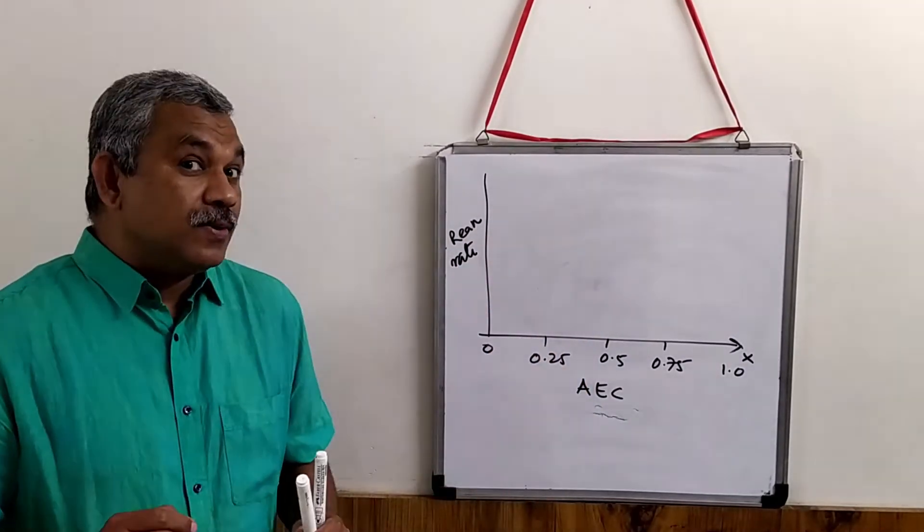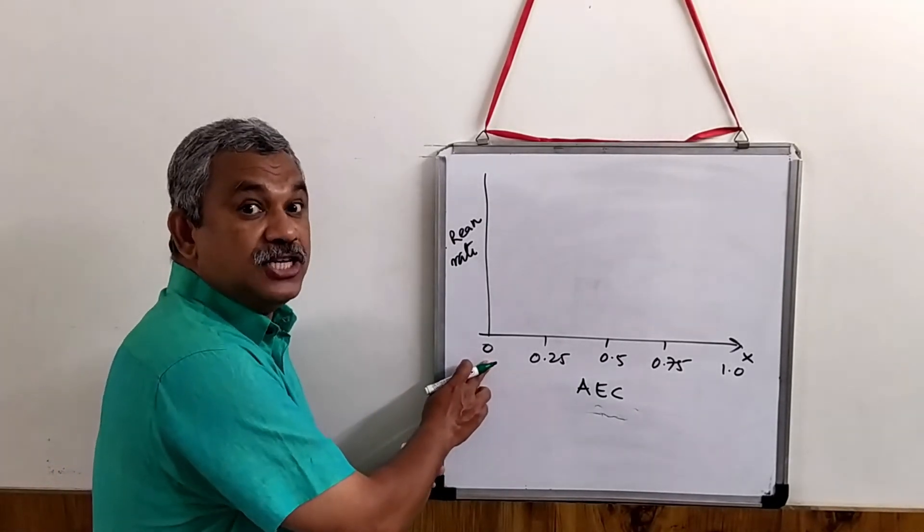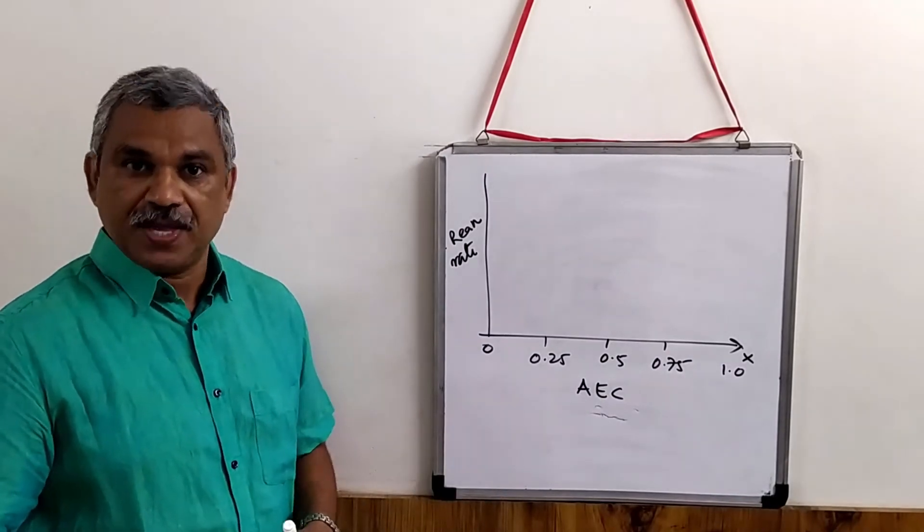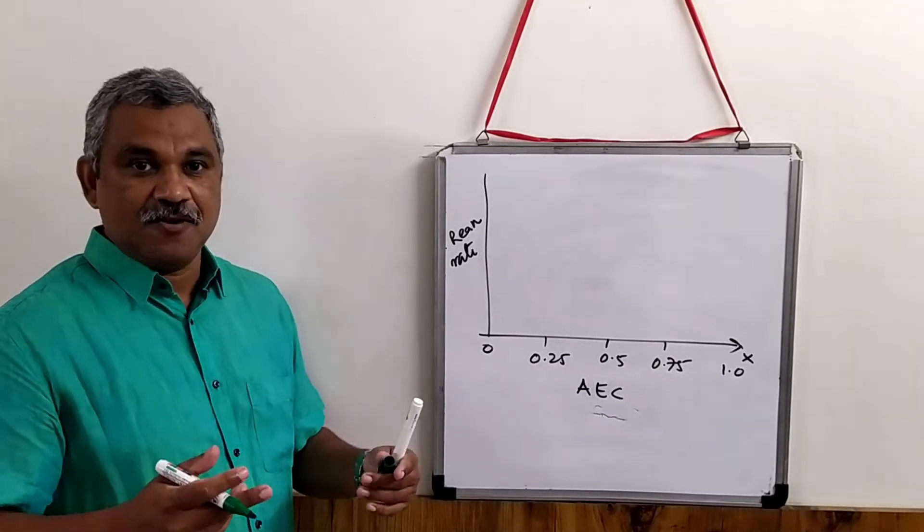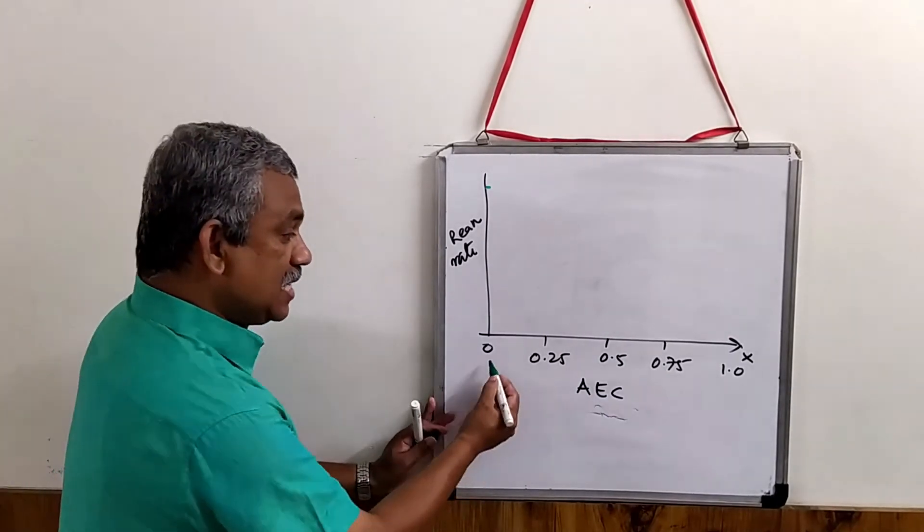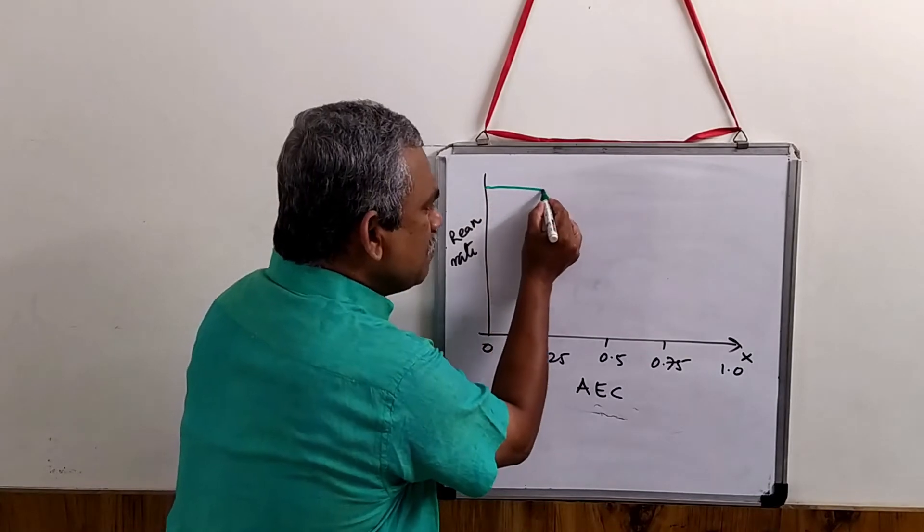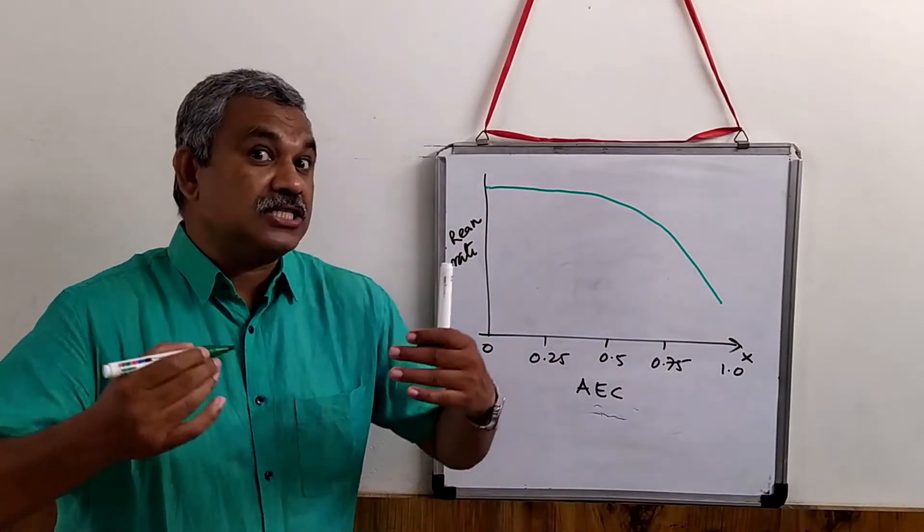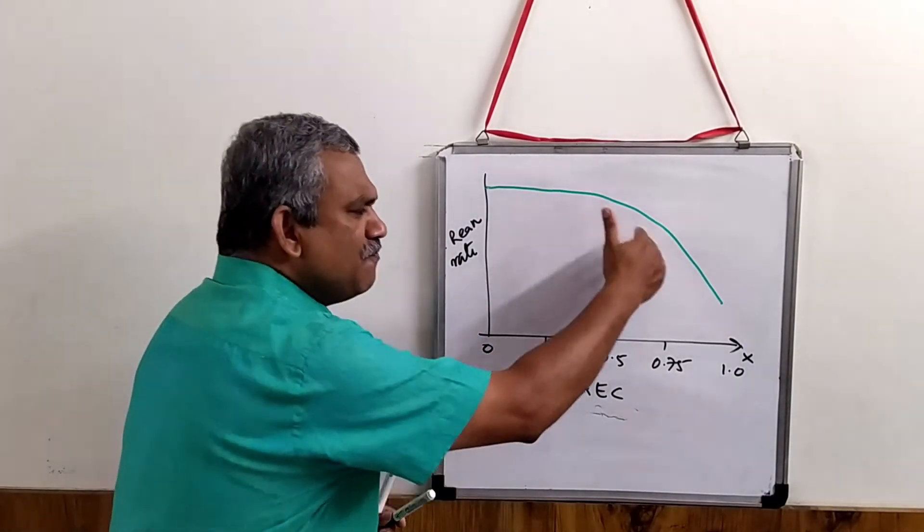Now, for example, we know that when the adenylate energy charge is 0, more and more ATP must be produced. Which means, all the degradative reactions will be highly active when the energy charge is 0. And then it will keep only increasing the energy charge. But as the energy charge increases in a cell, the degradative reactions will slow down.